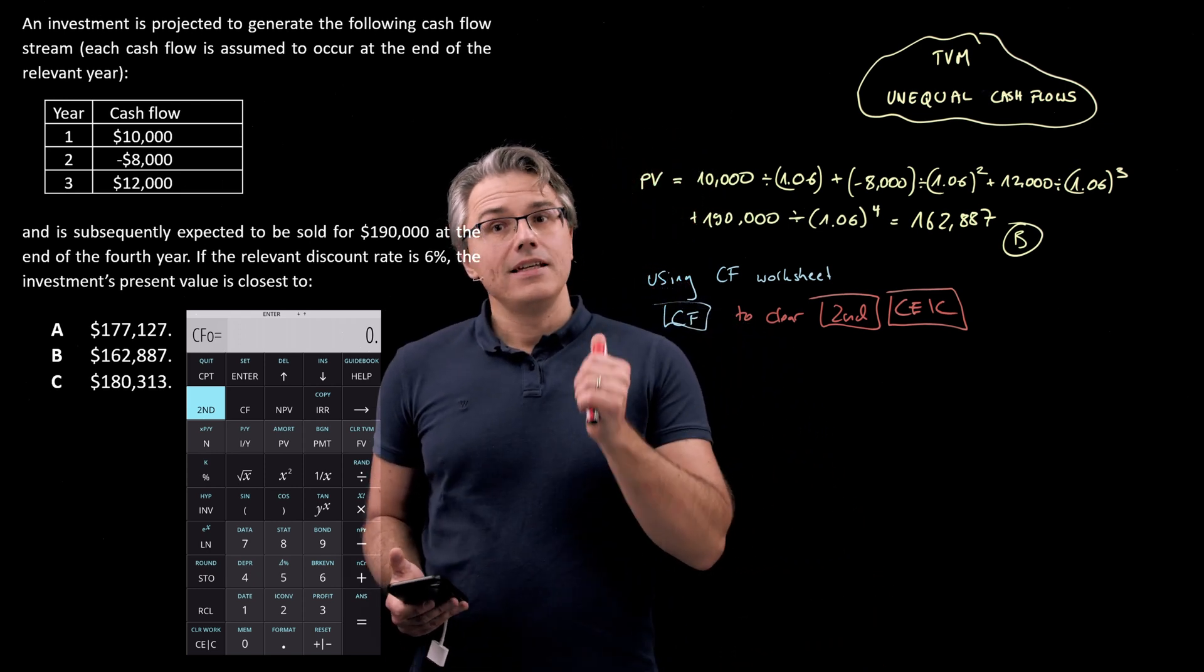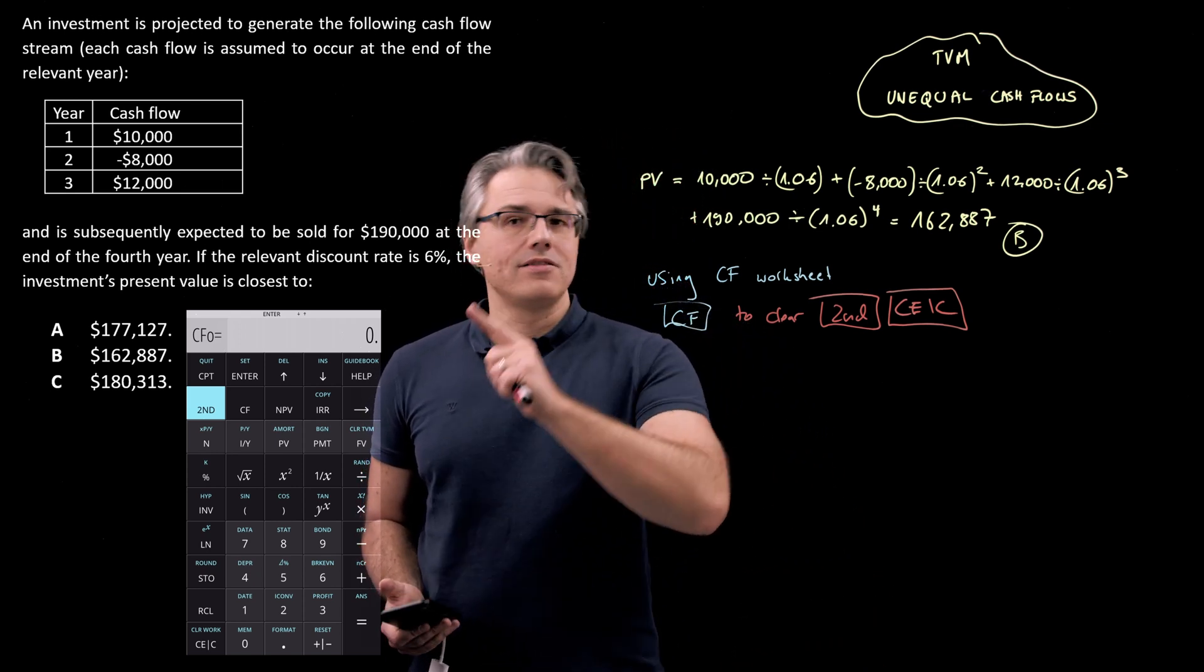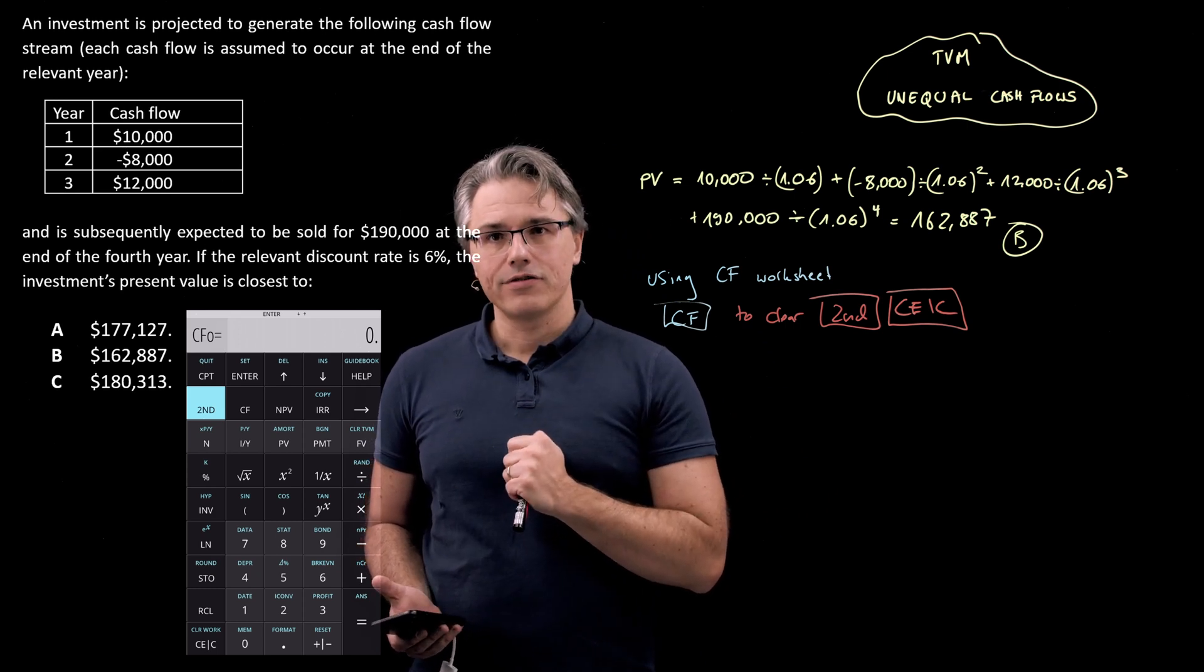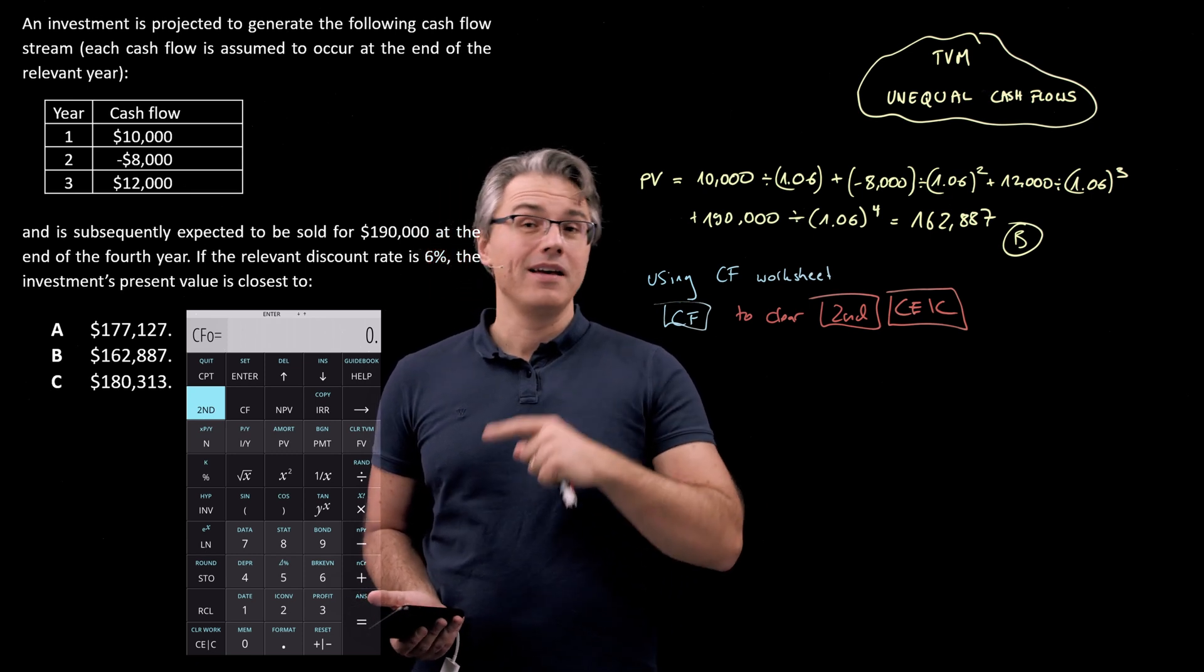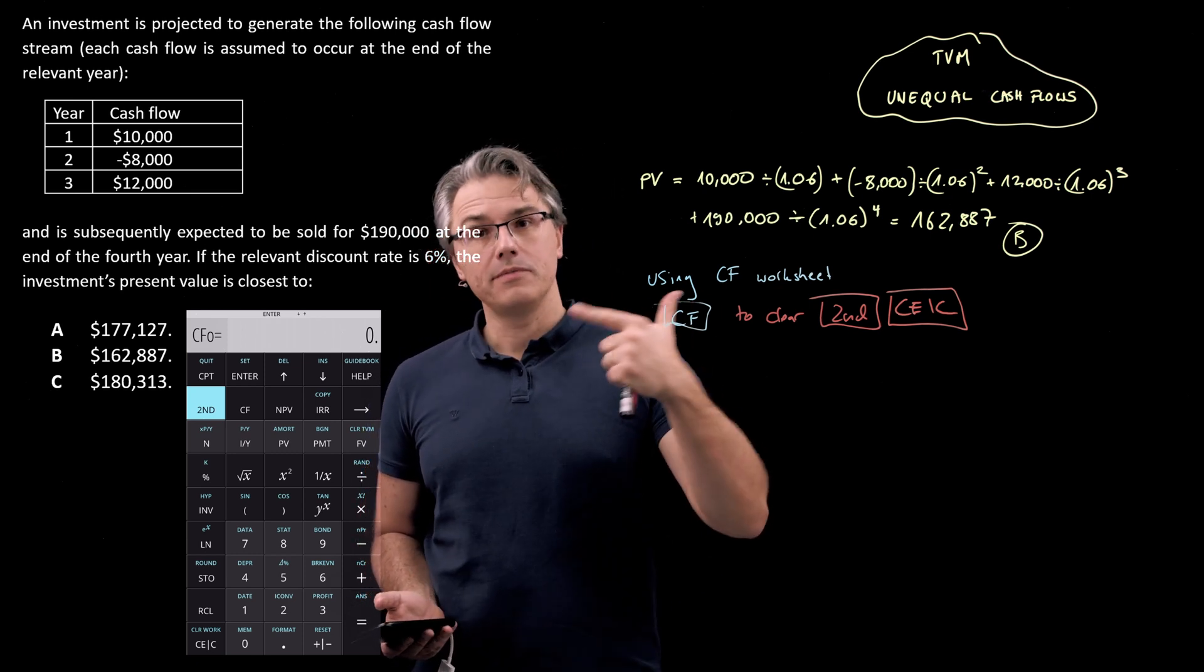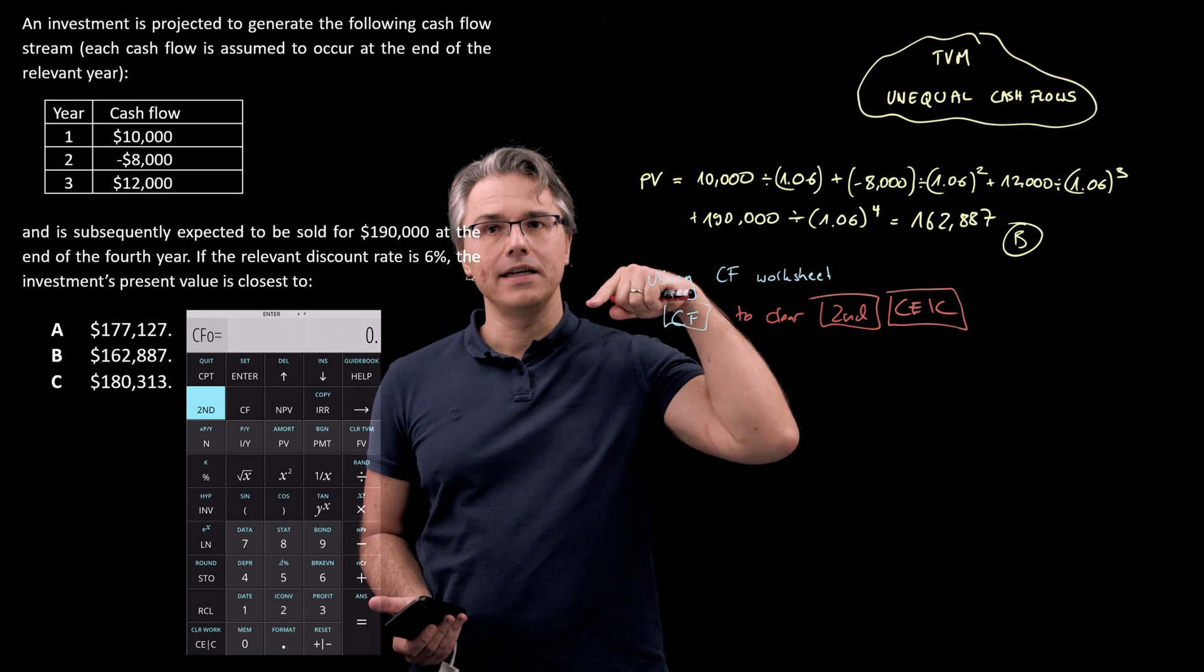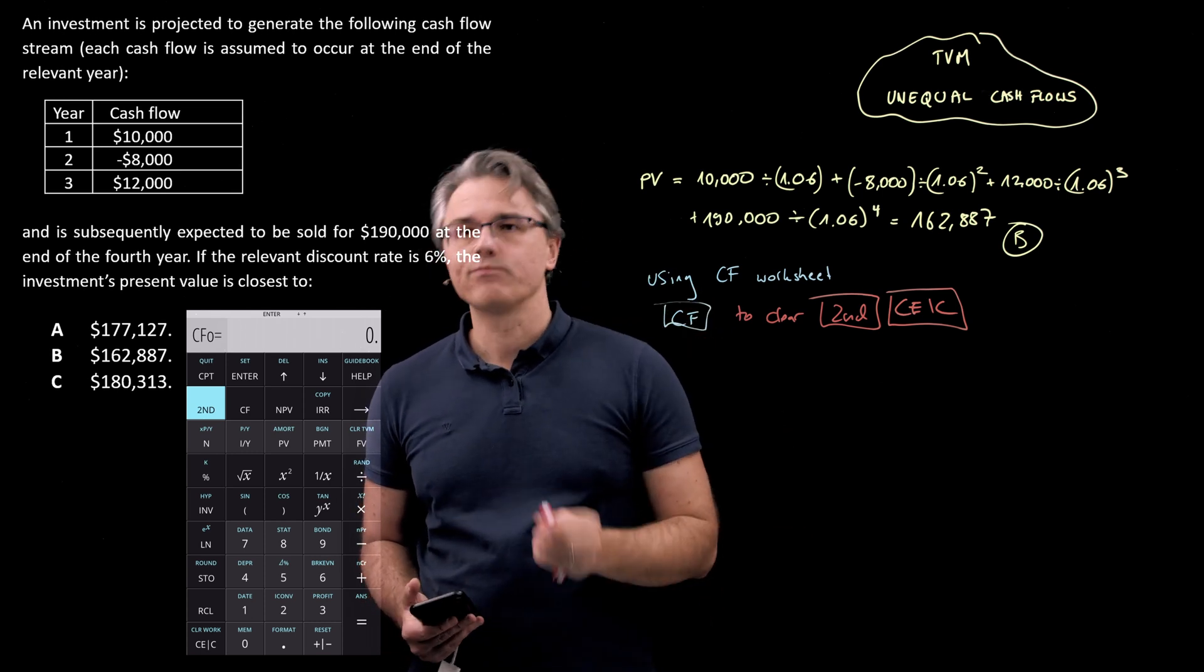It's only the TVM worksheet, which has its own dedicated clearing function, which is the secondary function of the FV key, which says clear TVM. The other worksheets on your calculator need to be cleared when you are specifically in them, like here in the CF. Okay.